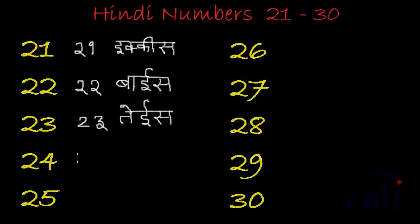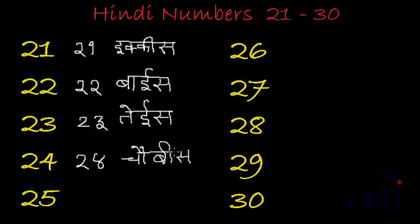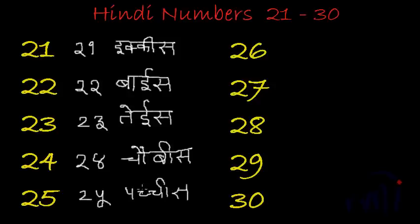24 is called chaubis. And 25 is called pachis — do paach, pa, chis. Pa, aadha cha, poora cha, badi i ki matra, ar sa — pachis.